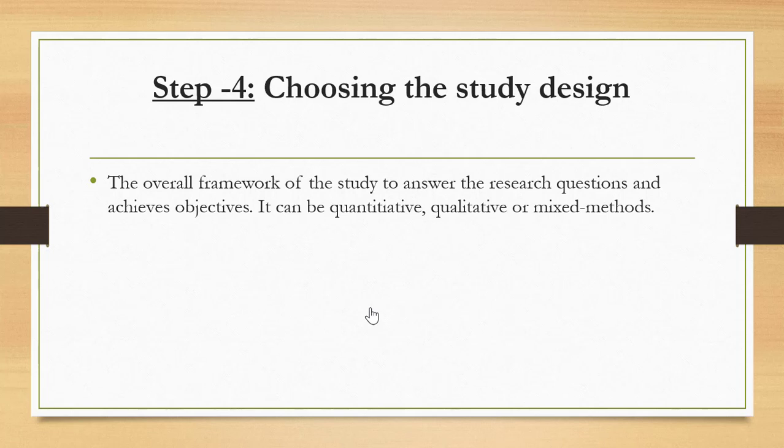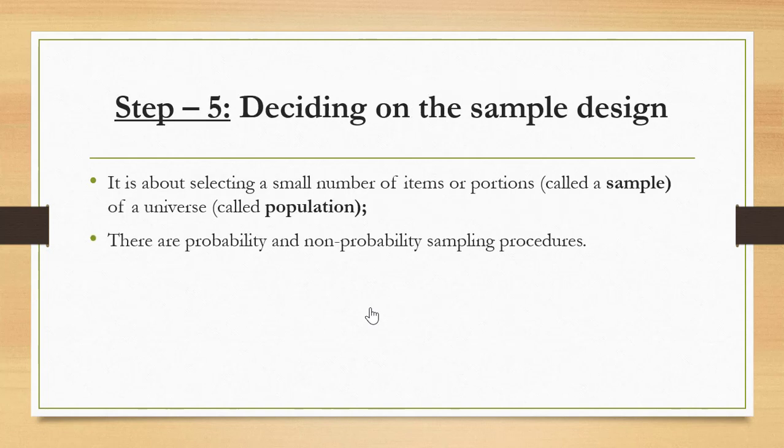Let's move to the fifth step, which is deciding on the sample design. We have a population or universe and a sample. We cannot investigate all members in the population; we just go about choosing a certain sample design.